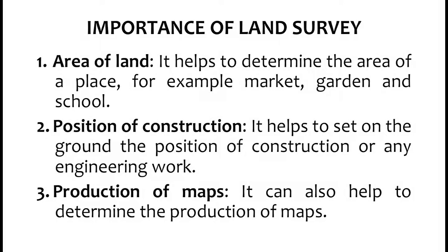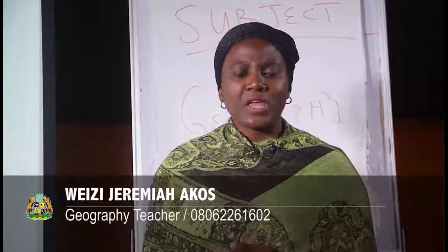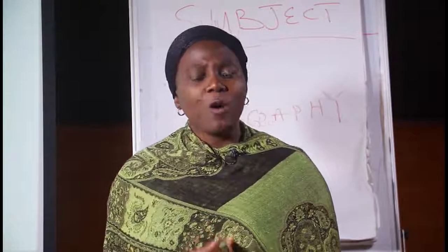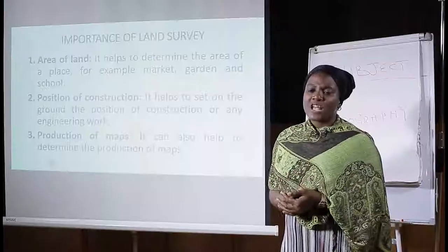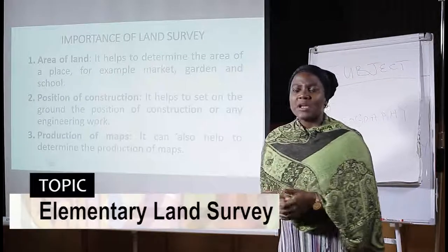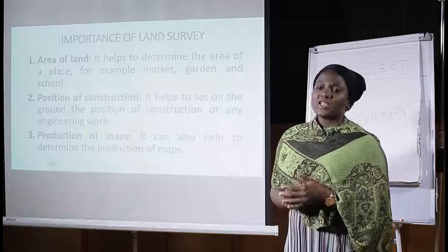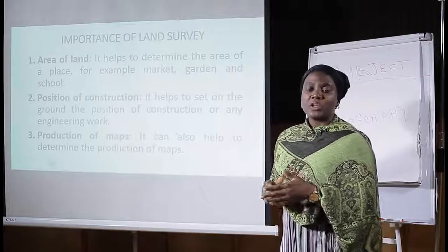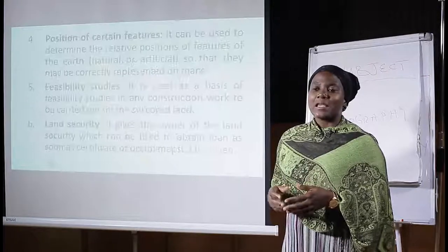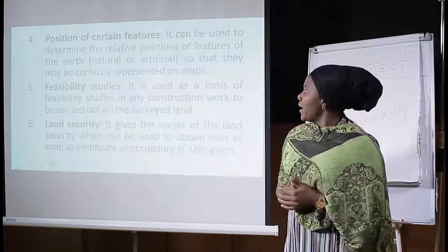Number three, we have production of maps. Land surveying can also help to determine the production of maps. Because land surveying involves measurements of dimension and contours, among other factors, it helps you determine where is this hill, where is this river, where is this valley. Because measurements have been taken, you can pick such measurements from the ground and represent them exactly on paper.